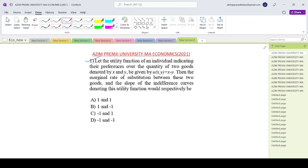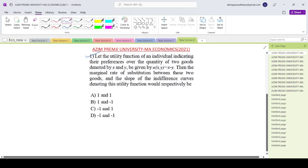Let the utility function of an individual indicating their preferences over the quantity of two goods be denoted by x and y as u(x,y) equals x minus y. Then the marginal rate of substitution between these two goods and the slope of the indifference curve will be given by what amount.